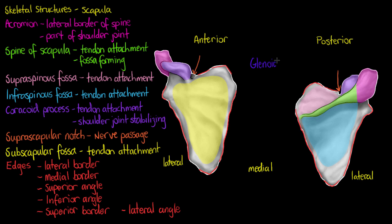The glenoid cavity is the depression in the bone where the head of our humerus fits in, helping to form our glenohumeral joint. That interacts with our coracoid process and the acromion — so the ball-shaped head of the humerus interacts with all three of those scapula structures to form the glenohumeral or shoulder joint. That covers all the features of our scapula. Thanks for watching and I'll see you again soon.